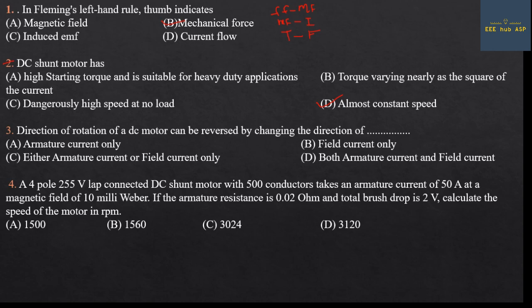Third question: Direction of rotation of a DC motor can be reversed by changing the direction of — armature current, field current, or either armature current or field current. Answer: Option C — either armature current or field current.